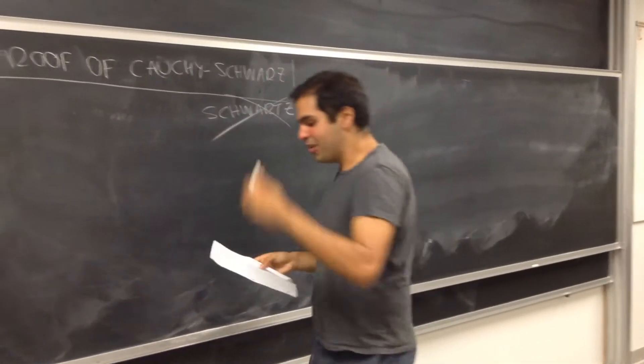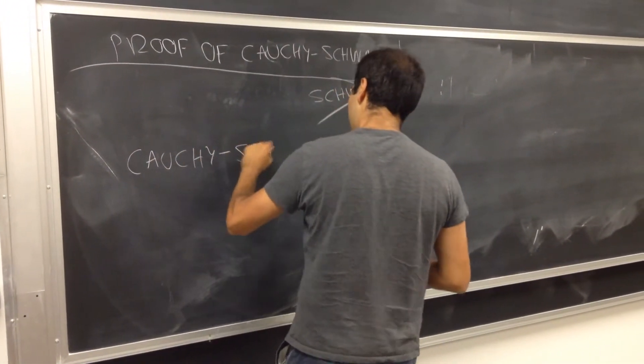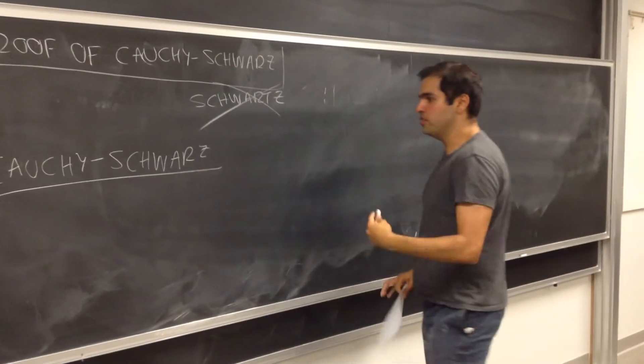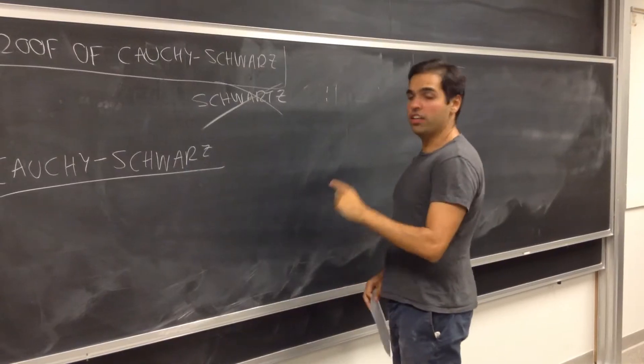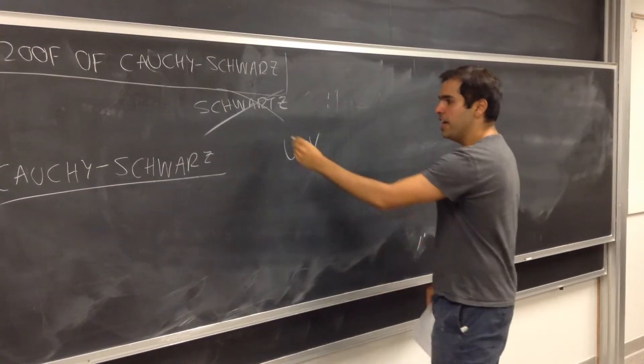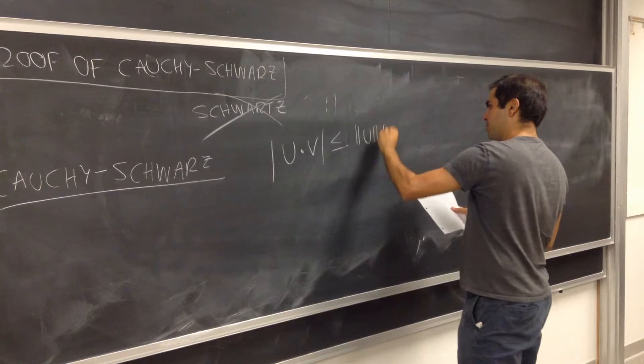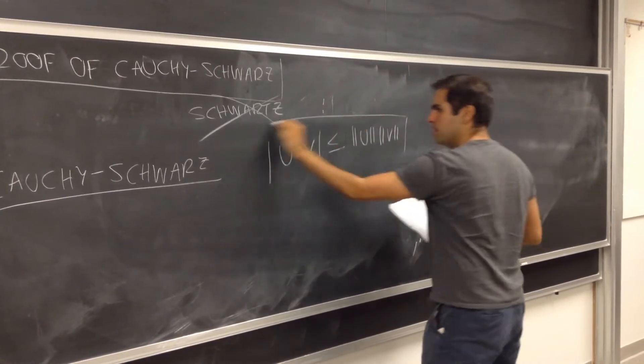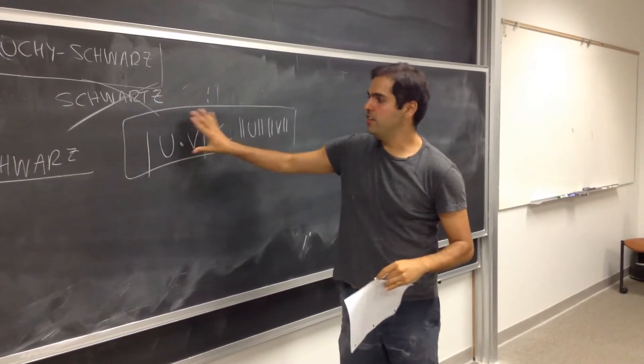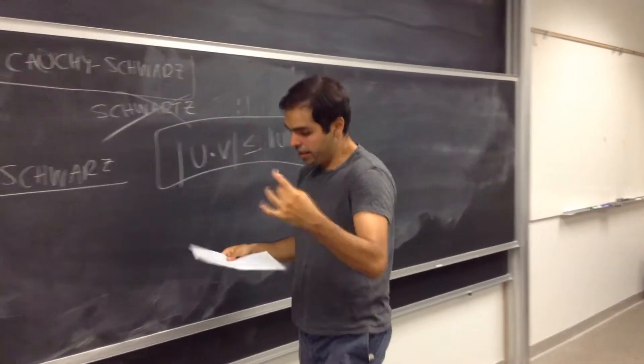And so what does the Cauchy-Schwarz inequality say? It's actually a very nice statement. It tells us that the dot product of two vectors, if you have two vectors u and v, and you dot them, it can never be bigger than the product of the norms. So the absolute value of the dot product, so this is a scalar, the absolute value of the scalar is always less than or equal to the product of the norm.